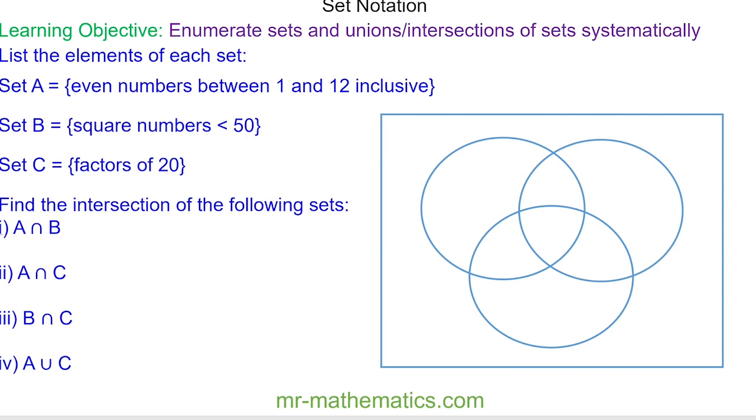List the elements of each set. Set A has all the even numbers between 1 and 12 inclusive. Set B has square numbers less than 50. Set C has factors of 20. Try and complete the Venn diagram by pausing the video and you can resume it when you're ready.